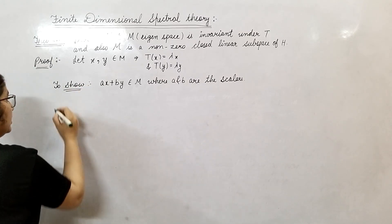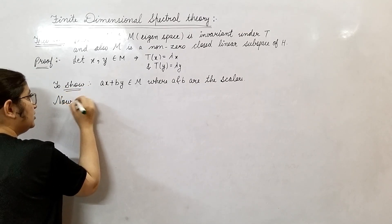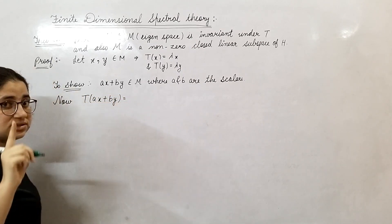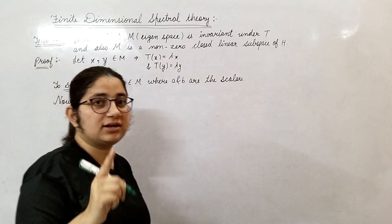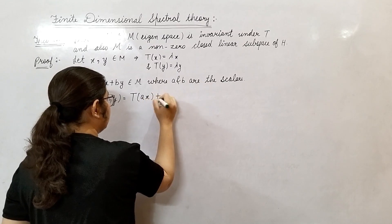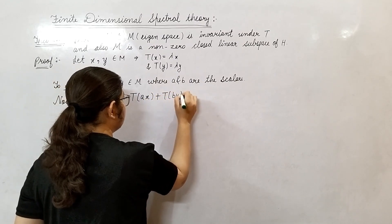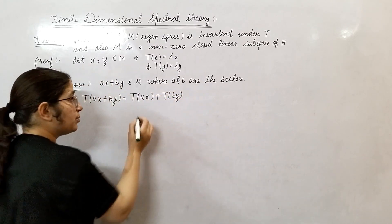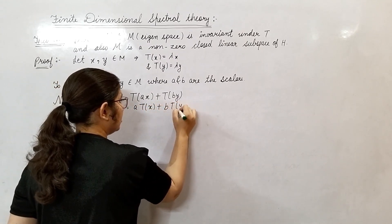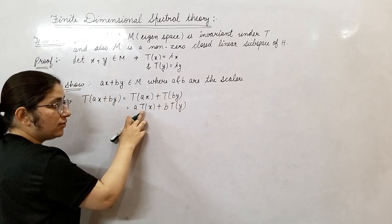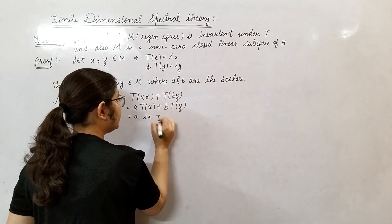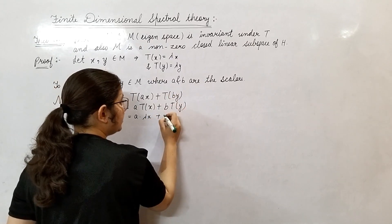Now, if we apply operator T on AX plus BY, what will we get? Since T is a linear operator, we can separate it on AX and on BY. Since T is a linear operator, the constants come out. The value of T(X) is lambda times X, giving A times lambda times X, plus the value of T(Y) is lambda times Y, giving B times lambda times Y.